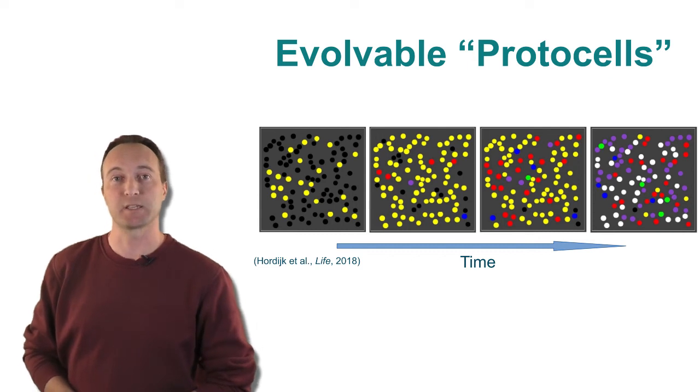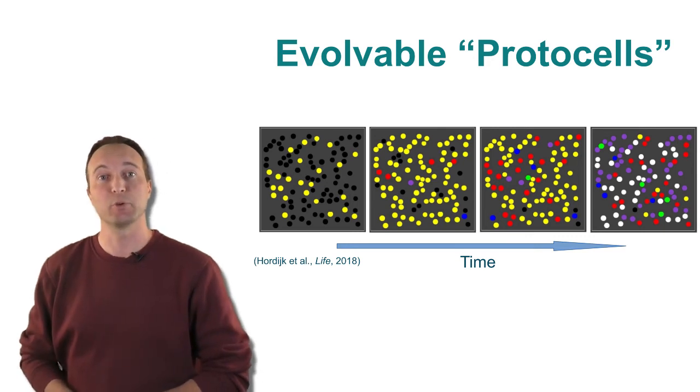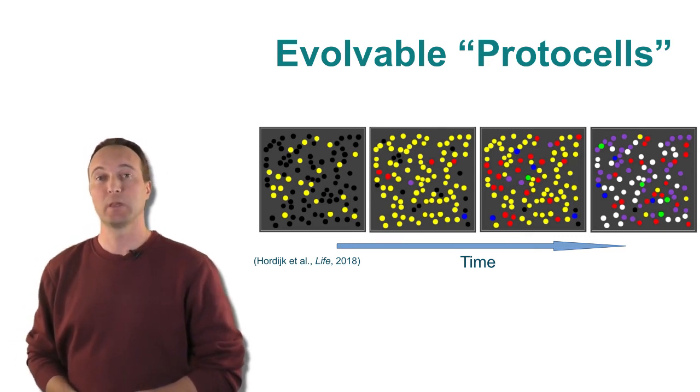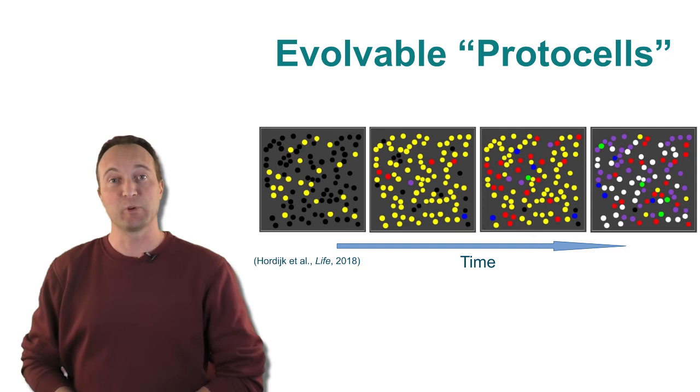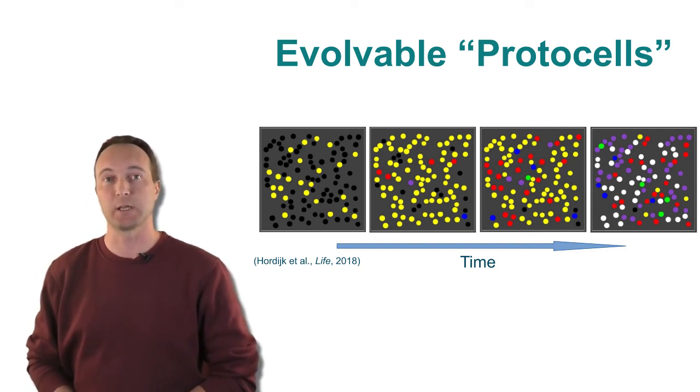Computational studies have shown that autocatalytic sets are indeed able to evolve and become more complex over time, exactly because of this existence of multiple autocatalytic subsets. This is shown here with simulated protocells changing color over time, depending on which autocatalytic subsets they contain.